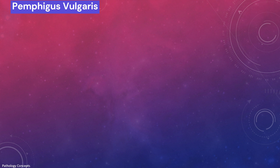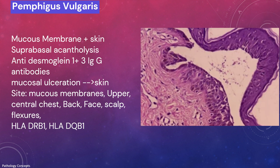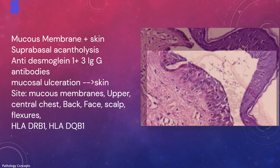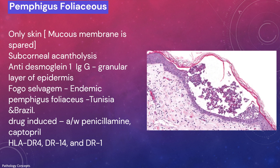Pemphigus vulgaris affects mucous membranes plus skin. Suprabasal acantholysis is seen. Autoantibodies are anti-desmoglein 1 and 3 immunoglobulin antibodies. The disease usually begins with mucosal ulceration, and when skin is involved later, the most common sites are mucous membrane, upper and central chest, back, face, scalp, and flexors. Associated HLAs are DRB1 and HLA-DQB1.